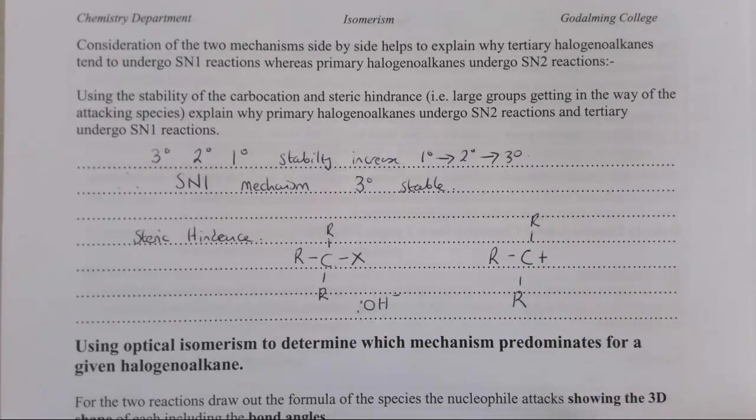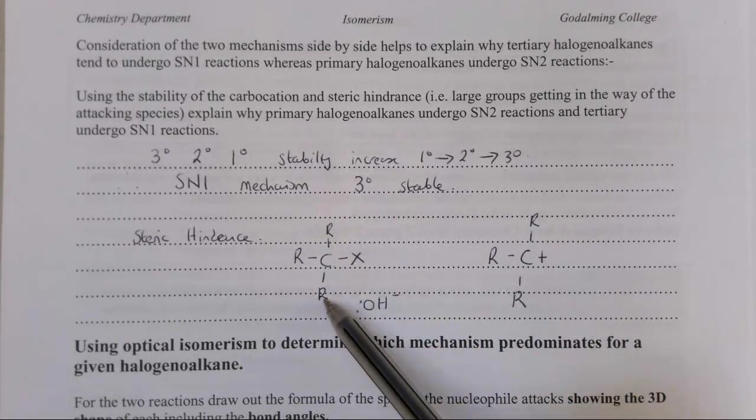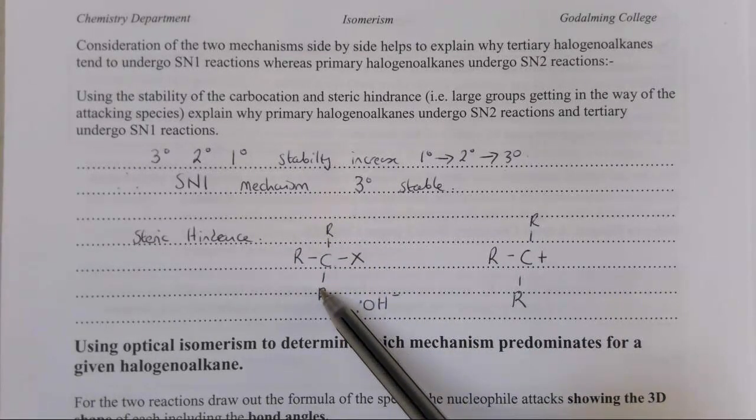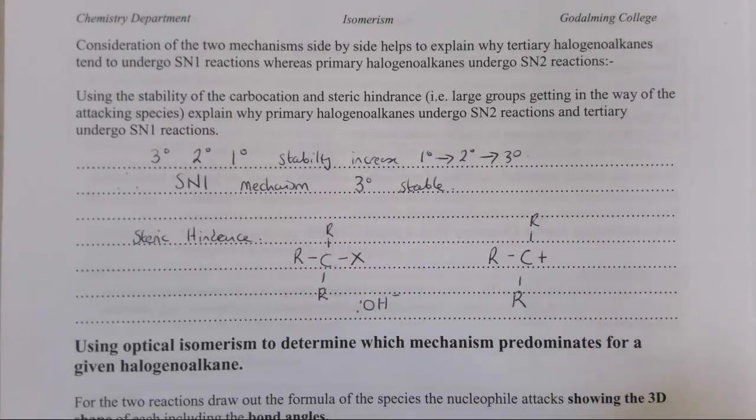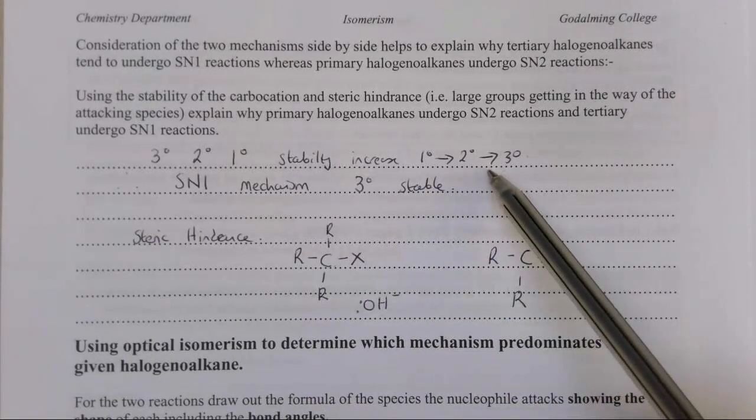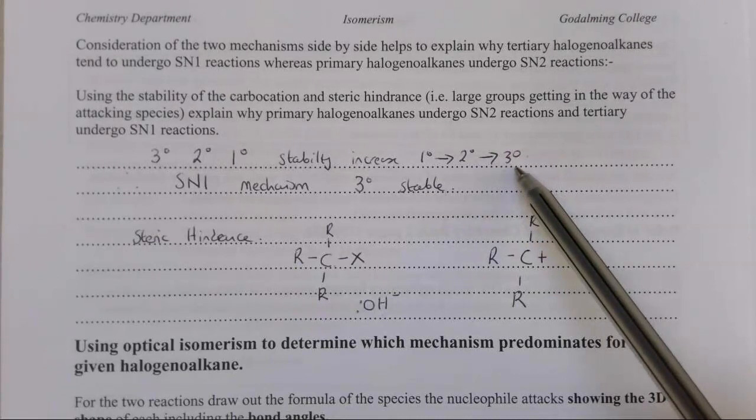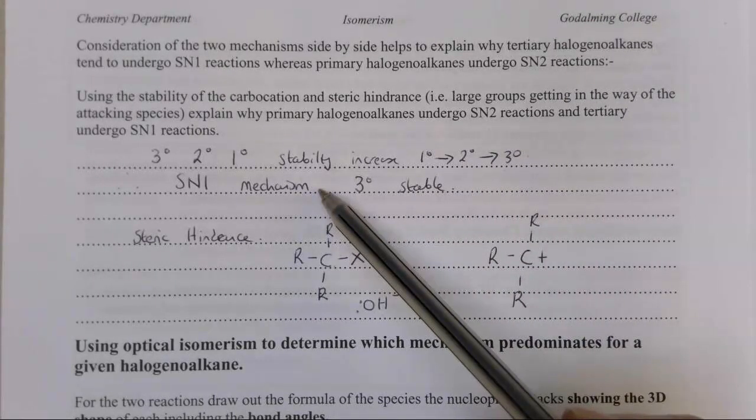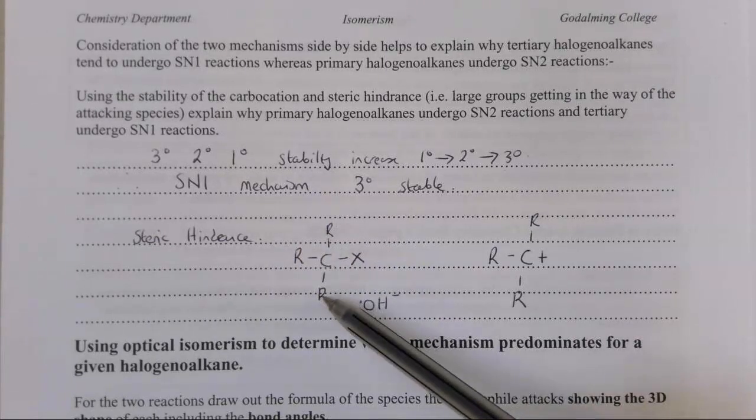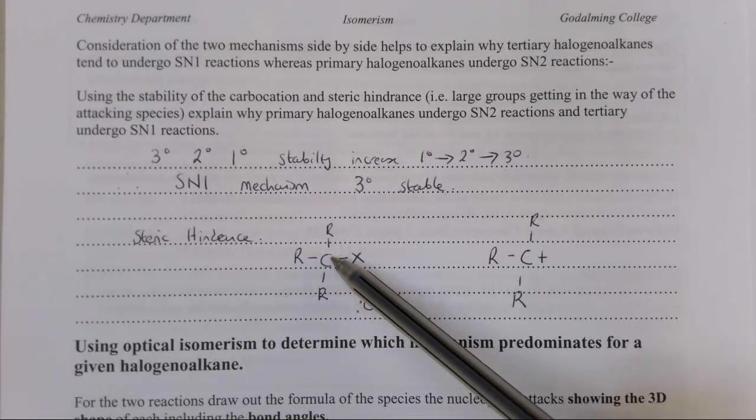Whereas with primary halogenoalkanes, these two R groups here are replaced by hydrogens. Hydrogens are very small, so they're not going to block the OH group from attacking. So those are the two reasons. The stability of the carbocation, where the tertiary carbocation is very stable. So that helps the SN1 mechanism. And steric hindrance, where having large groups around the carbon we're trying to attack limits the SN2 mechanism. So that finishes looking at the SN1 and the SN2 mechanisms for primary and tertiary halogenoalkanes. We've gone through a bit about why primary halogenoalkanes undergo an SN2 mechanism, whereas tertiary halogenoalkanes undergo an SN1 mechanism.